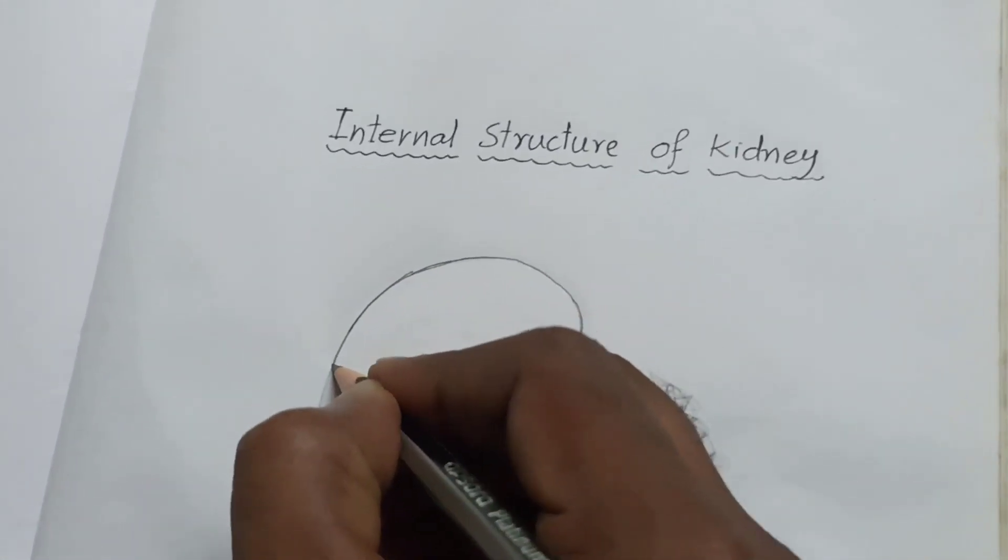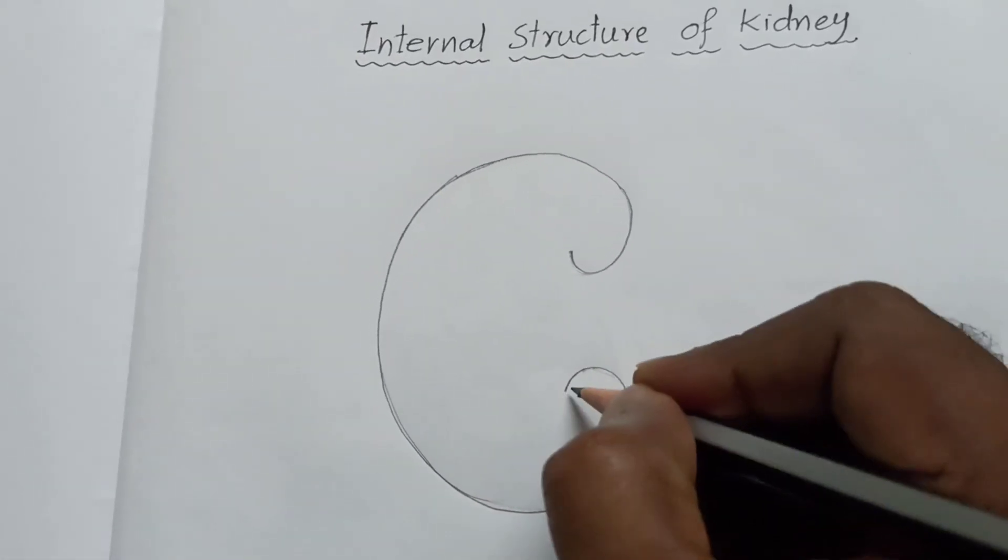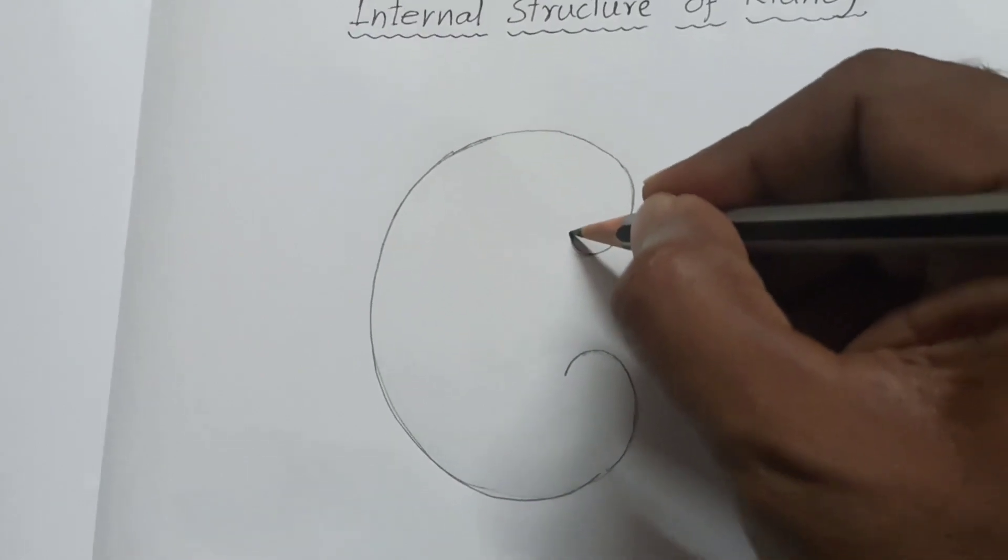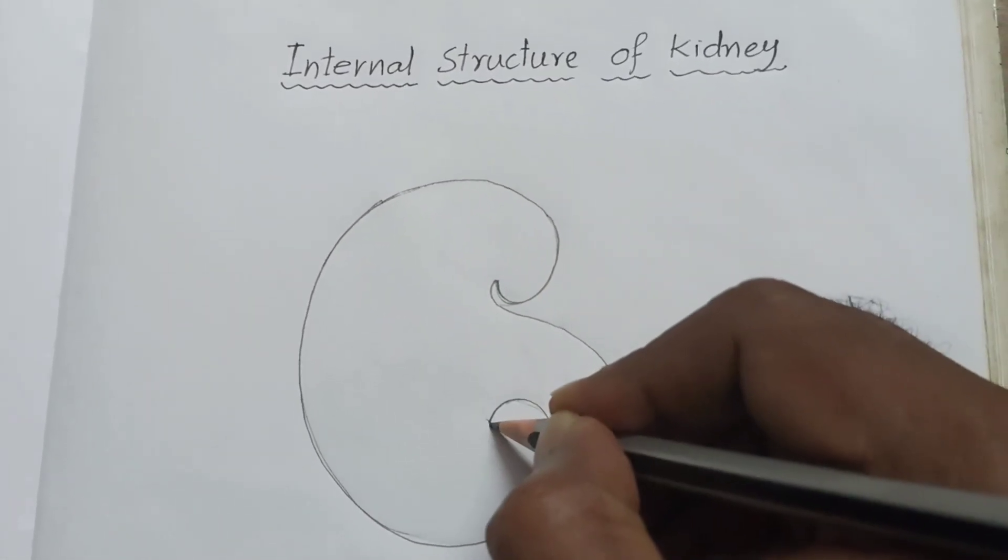One C shape. Generally kidneys are in bean shape. From here now I am drawing ureter.